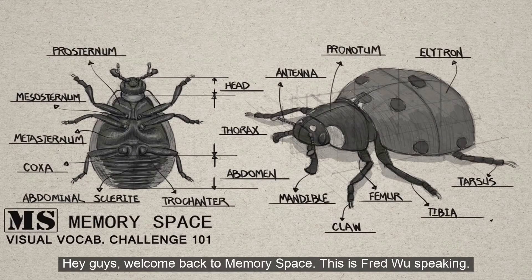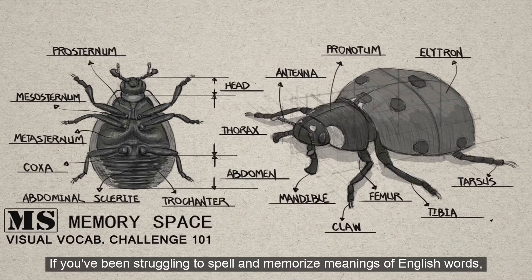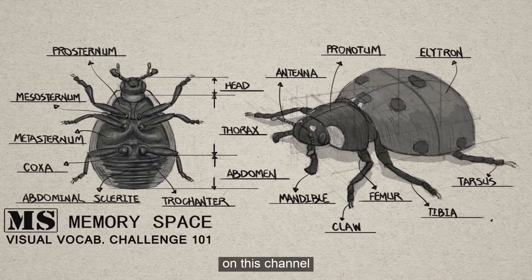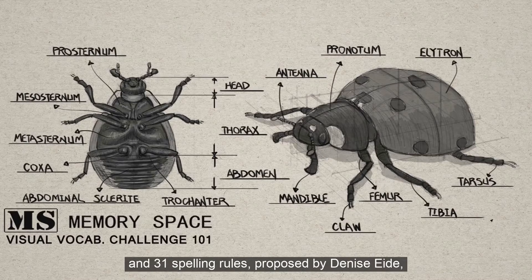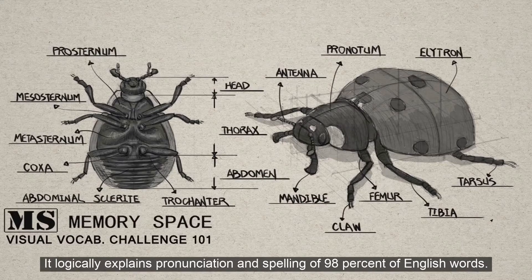Hey guys, welcome back to Memory Space, this is Froh speaking. If you've been struggling to spell and memorize meanings of English words, Memory Space can help. The third system I use on this channel is 75 common phonograms and 31 spelling rules proposed by Denizade, the founder of Logic of English, which logically explains the pronunciation and spelling of 98% of English words.